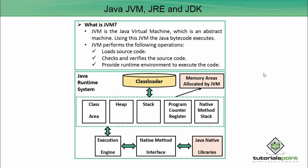Next is the stack: Java stack stores frames, holds local variables and partial results, and plays a part in method invocation and return. Each thread has a private JVM stack created at the same time as the thread. A new frame is created each time a method is invoked, and a frame is destroyed when its method invocation completes. The program counter register, also known as the PC register, contains the address of the Java Virtual Machine instruction currently being executed. The native method stack contains all the native methods used in the application.